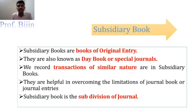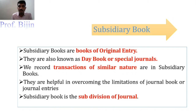That point differentiates subsidiary books from the general journal. In the general journal, all transactions are recorded without any classification — whether payment, purchase, or sales. But in a subsidiary book, we record only transactions of a similar nature. For example, there is a separate book for sales, a separate book for purchases, and a separate book for payments and receipts, known as the cash book.